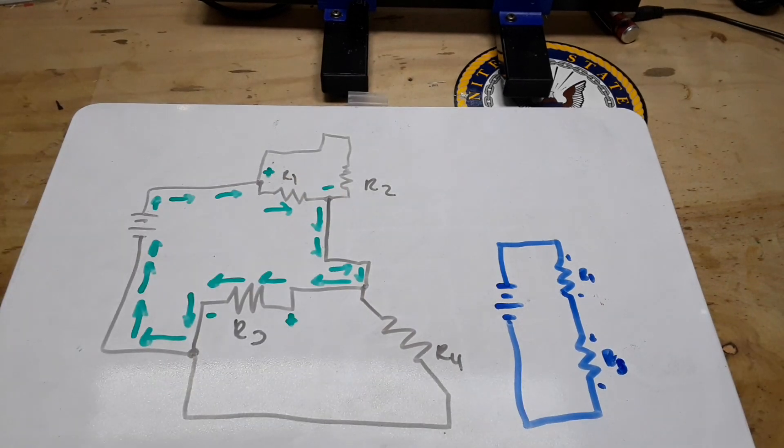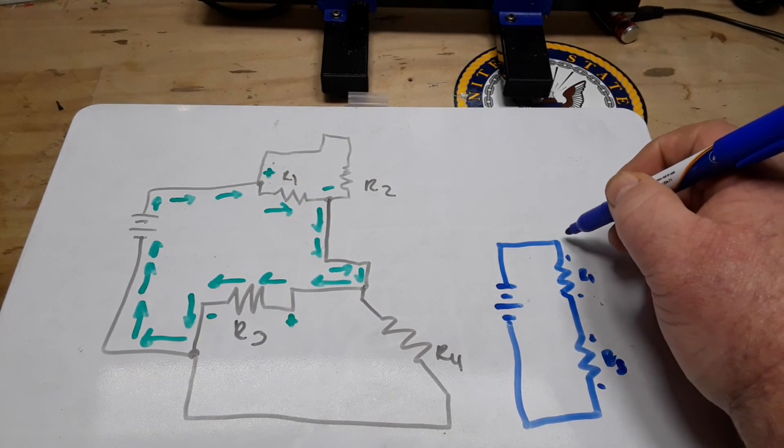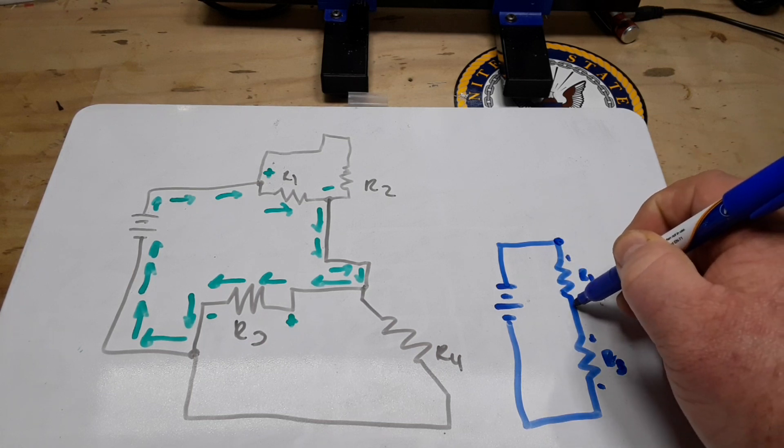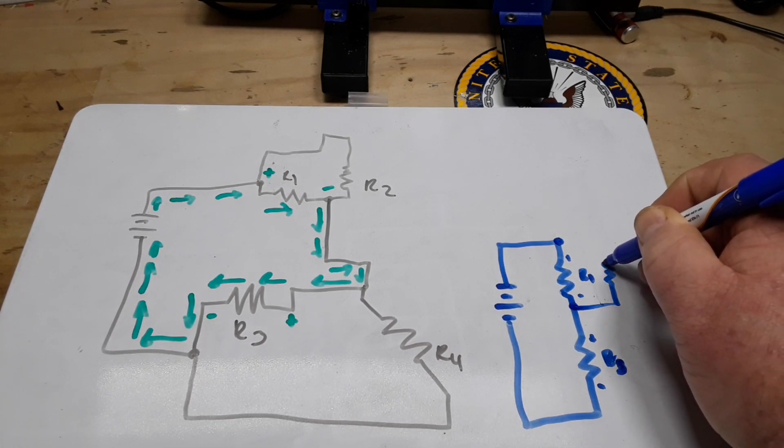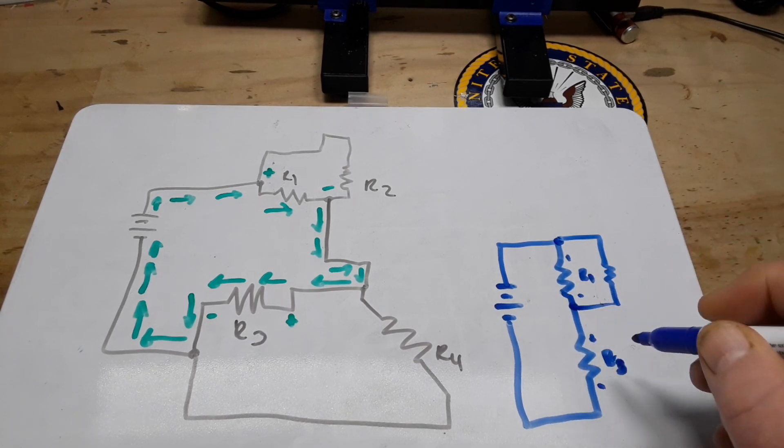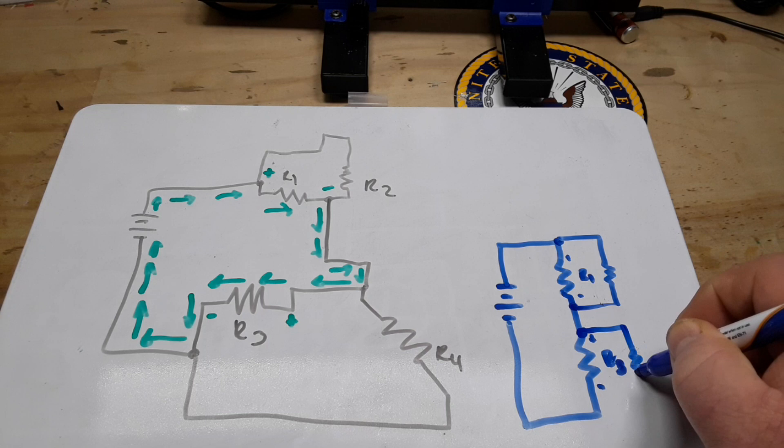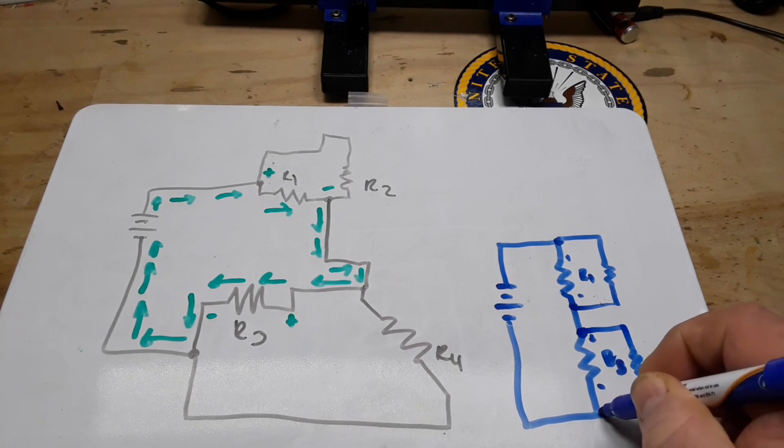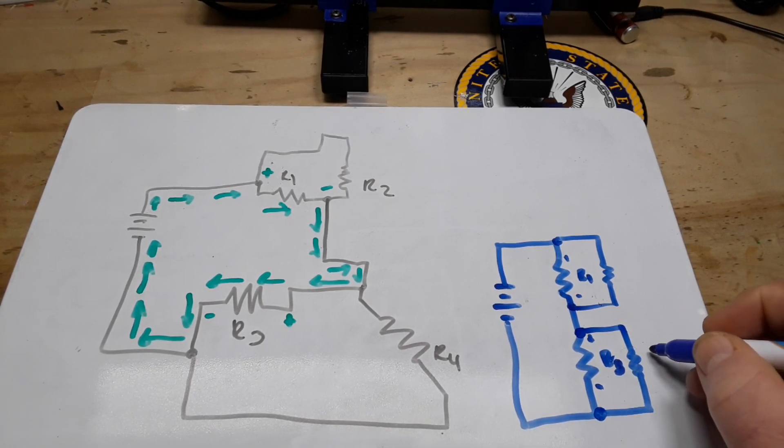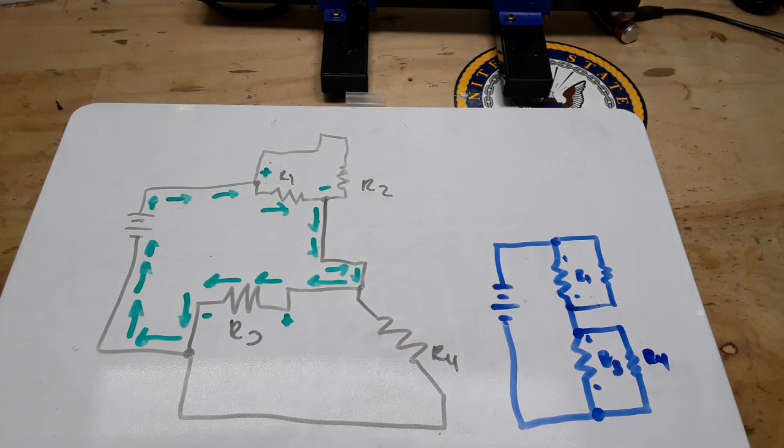So I'm looking here now, OK, R2 is just right here, and R4 is right there like that.